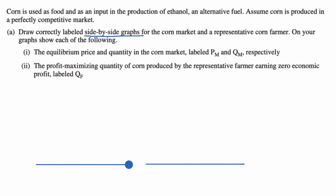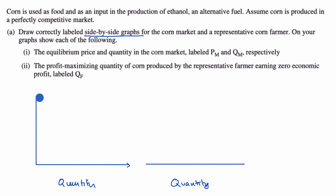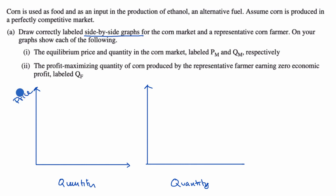This is going to be quantity in the market, and then this is going to be quantity for the farmer. This is going to be price in the market, and whatever the market price is, that's also going to be the price that the farmer has to take. Because it's a perfectly competitive market, the farmer is going to be a price taker. So this is price over here, and this is price over here.